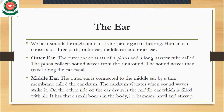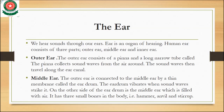The next sense organ is the ear. The function of the ear is that you can hear sounds through our ears. The ear is an organ of hearing. The human ear consists of three parts: the outer ear, the middle ear, and the inner ear.